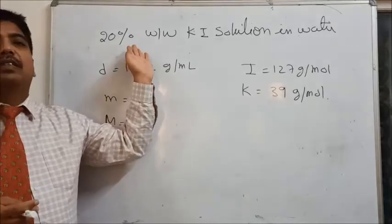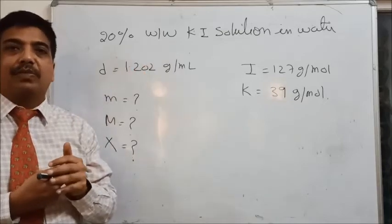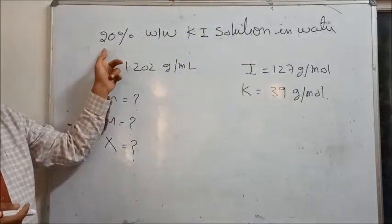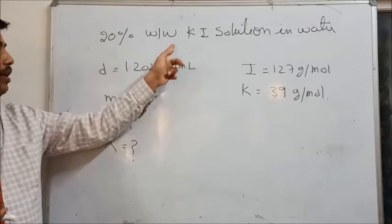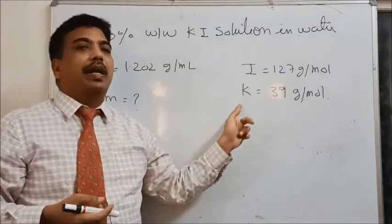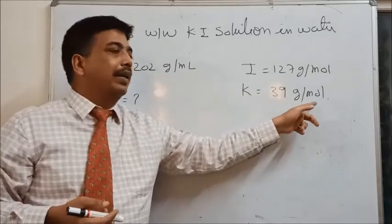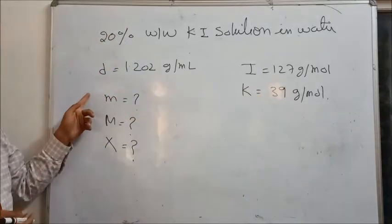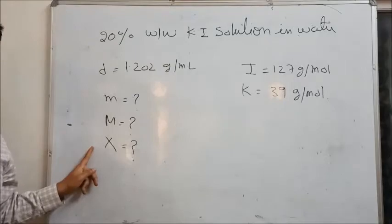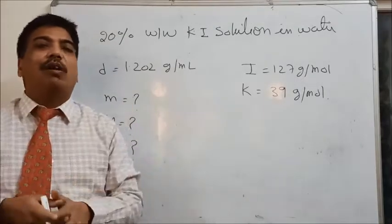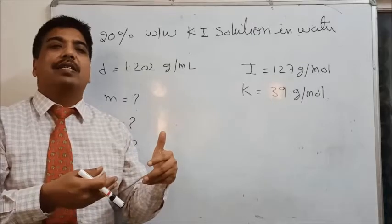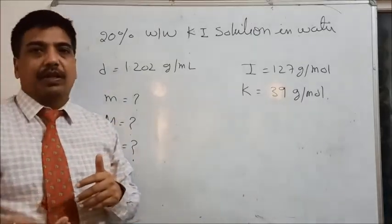Now here is a numerical problem common in CBSE and IIT exams. A solution of KI in water has a concentration of 20% weight by weight. The density of solution is given, along with molecular mass of iodine as 127 g/mol and potassium as 39 g/mol. Find the molarity, molality, and mole fraction of KI and water. You can pause the screen and try to solve it yourself before checking the solution.